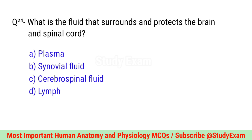Question number twenty-four. What is the fluid that surrounds and protects the brain and spinal cord? Correct option is C. Cerebrospinal fluid.